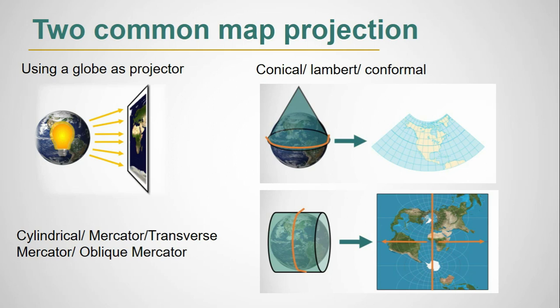Cylindrical projection is also called Mercator, Transverse Mercator, or Oblique Mercator projection based on different cases. And conical projection is also called Lambert and Conformal projection based on different cases. If we consider the Earth as a light and trace Earth's points on a flat surface, then we get a flat 2D map. And this is the concept behind projection. We have the image of cylindrical and conical projection.